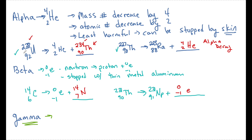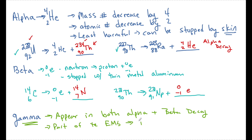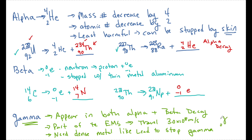Gamma rays are going to appear in both alpha and beta types of decay — not always, but this is where they appear. These are part of the electromagnetic spectrum, so they travel at the speed of light. They have an extreme amount of energy and really high frequency, so we're going to need some lead to stop them. They will explicitly tell you that gamma is present because gamma does not have any mass or charge, so it would not affect the atomic mass or the mass number. A gamma ray is a high-energy photon emitted when neutrons and protons fall energy levels inside the nucleus.